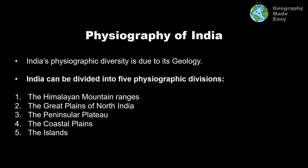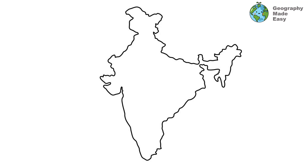The five physiographic divisions are: the Himalayan mountain ranges, the Great Plains of North India, the Peninsular Plateau, the Coastal Plains, and the Islands. In this map, we will see the broad divisions of India into these five major parts.